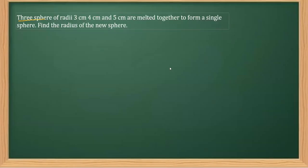In this question it says there are three spheres whose radii are 3 cm, 4 cm, and 5 cm. They are melted to form a single sphere, and we have to find the radius of that new sphere.